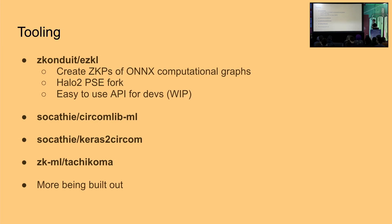Now I'll talk about the tooling and state of the art — what you can actually use today. The first tool is ezkl, which allows you to create proofs of ONNX computational graphs. ONNX is a standardized format you can use to export machine learning models from different frameworks — if you're an ML engineer using PyTorch, Keras, or TensorFlow, you can export your model to ONNX, feed it into ezkl, and create a proof that inference happened correctly. ezkl uses a fork of Halo 2's proving system created by the Privacy Scaling Explorations Group at the Ethereum Foundation.